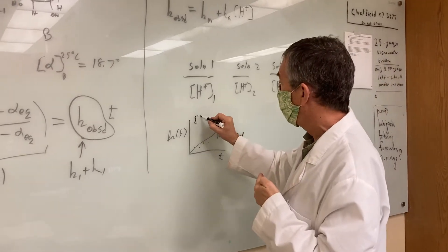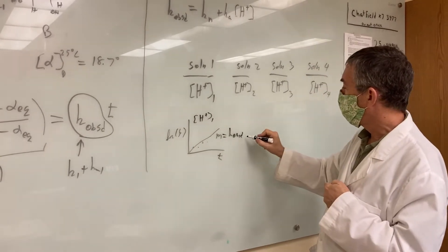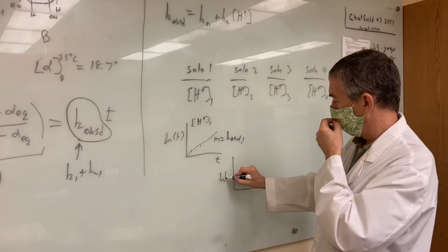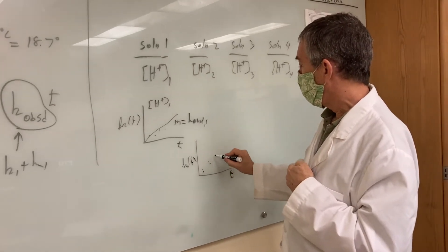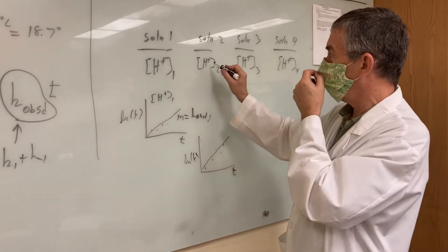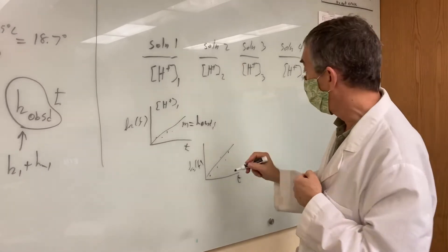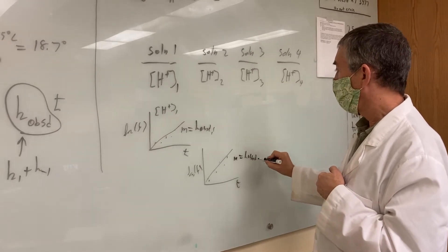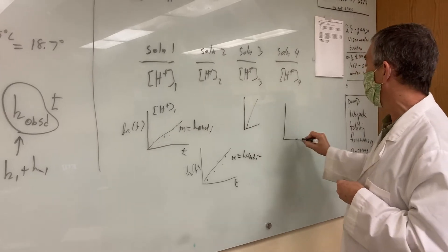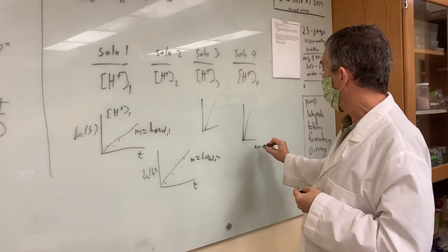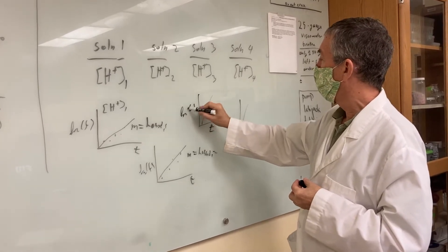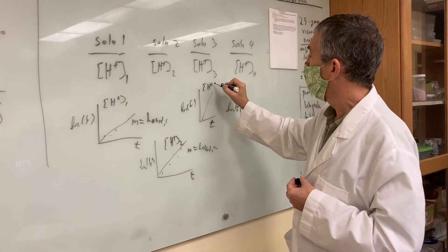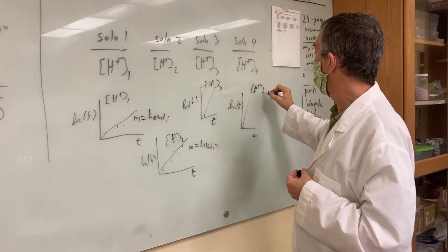Now, this was for a particular value of H-plus, maybe H-plus-1. So, we'll call that K observed 1. Then you're going to do the same thing for solution 2. Now, you can probably predict this slope's going to be larger than this one, if this H-plus concentration is larger than this one. And then you do it again, and then you do it again. And you'll get four different plots of log F versus time, but for different H-plus concentrations.